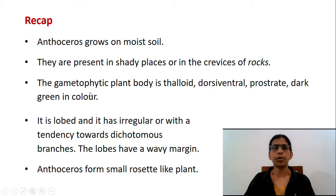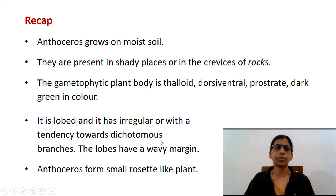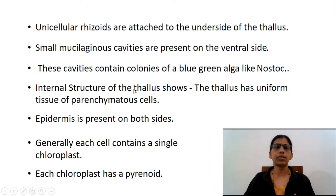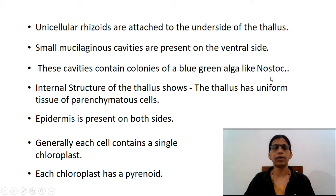The gametophytic plant body is thaloid, dorsi-ventral, prostrate, and dark green in colour. It is lobed, irregular, and has a tendency towards dichotomous branching. The lobes have a wavy margin. Anthoceros forms a small rosette-like plant. Unicellular rhizoids are attached to the underside of the thallus. Small mucilaginous cavities are present on the ventral side, containing colonies of blue-green alga like Nostoc. Stomata-like small slits are present on the thallus and mucilage oozes out through these slits.